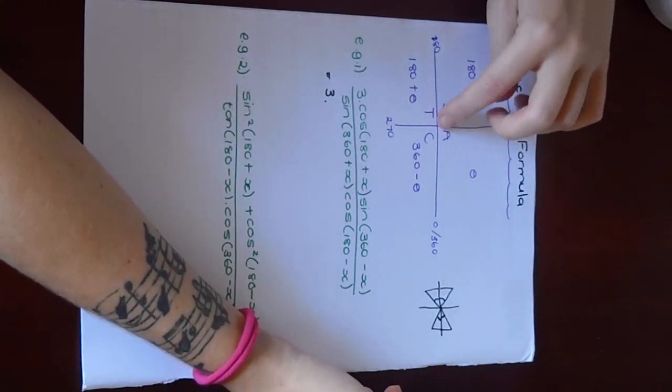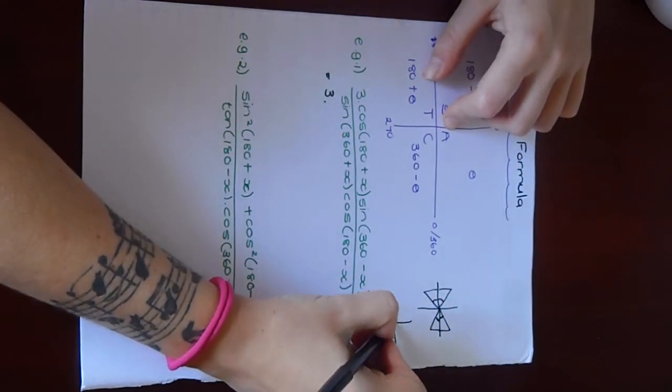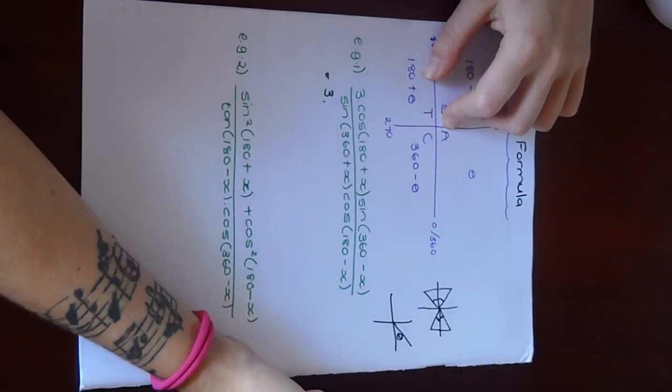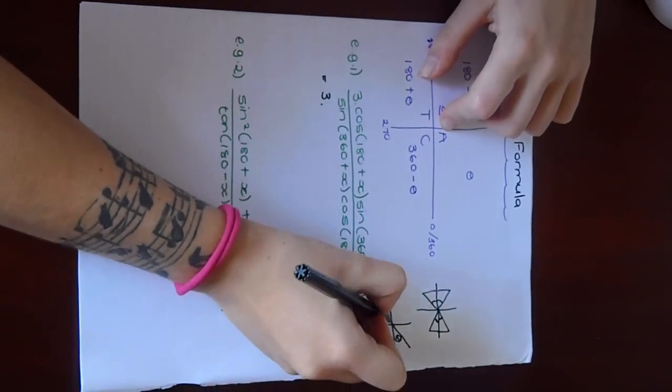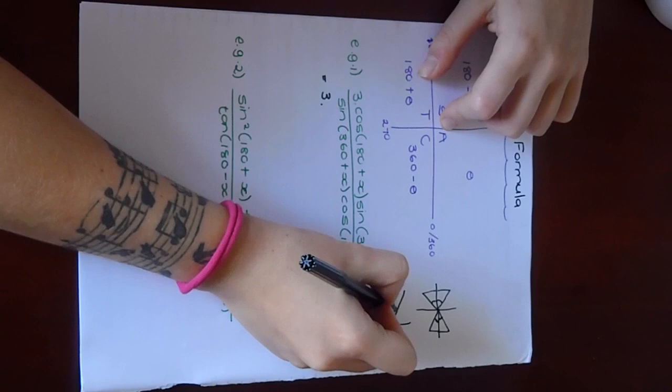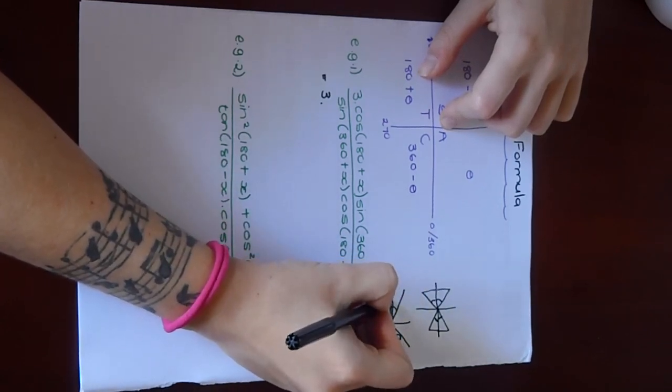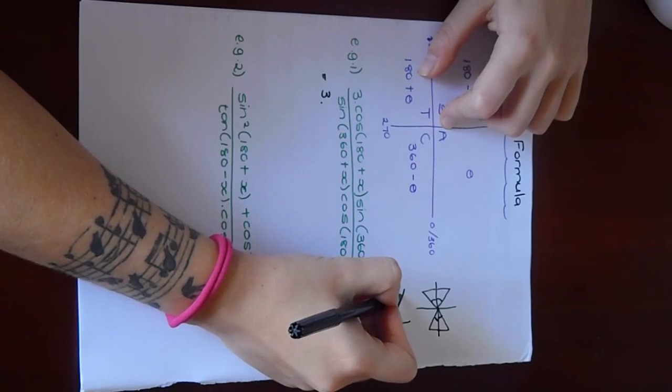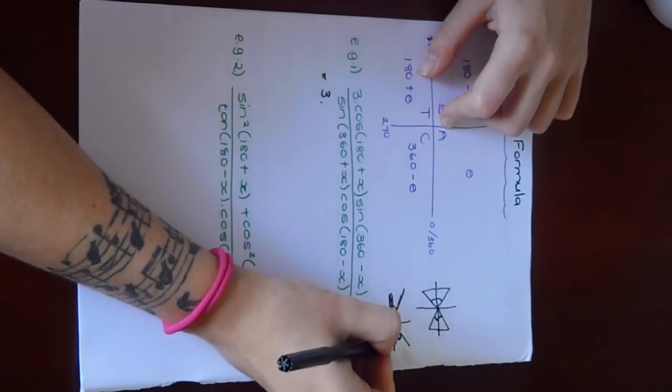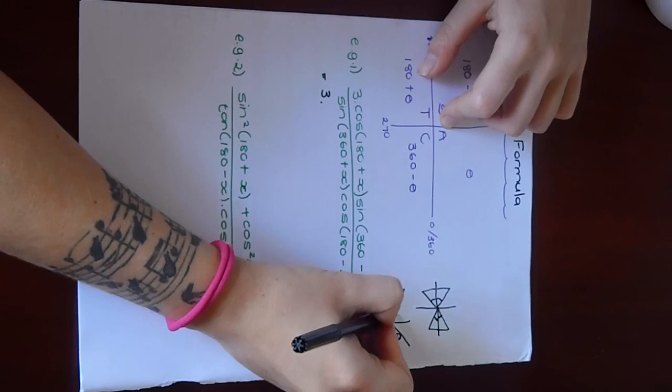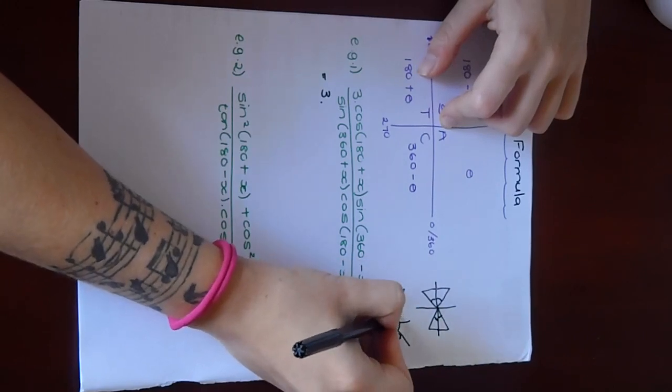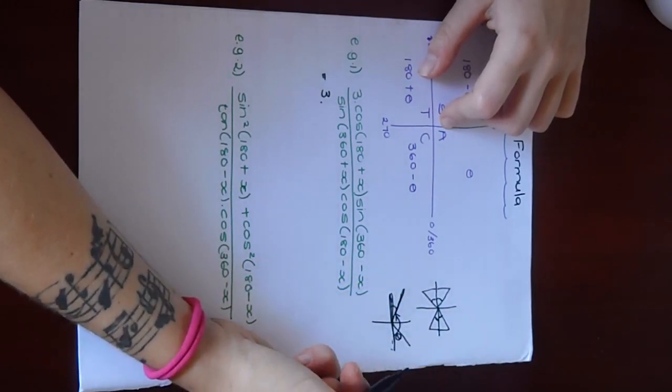If you think about it, if this is theta, the same angle would be formed on this side, and this would be 180 minus theta to get here. This is a 180 degree line, it's a straight line, so you could minus theta to get this angle, then this whole angle would be 180 minus theta.